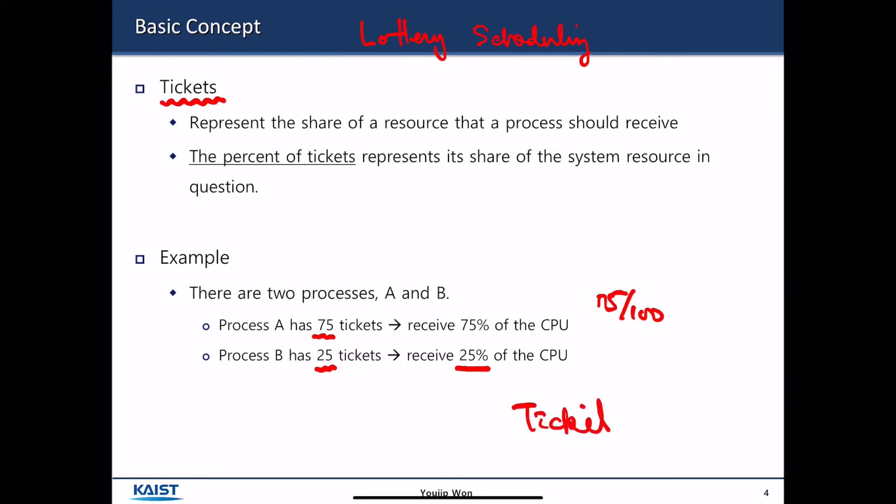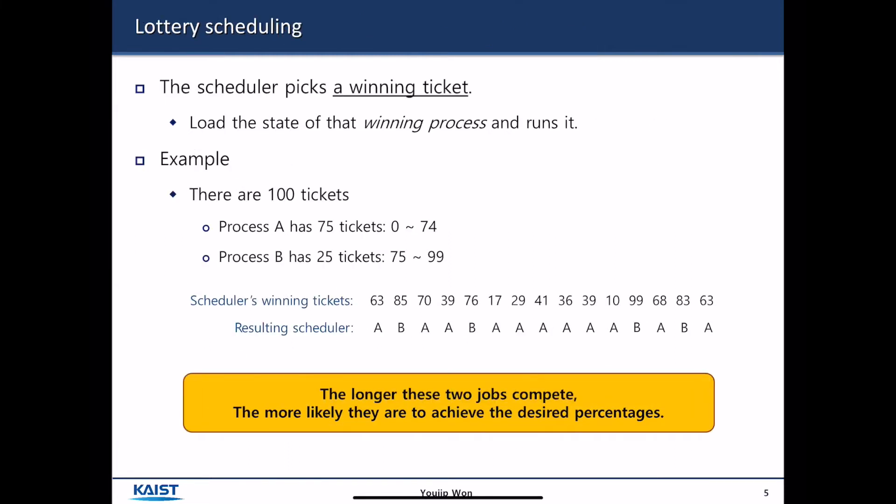Based upon Ticket, they define a scheduling strategy called Lottery-based Scheduling. A scheduler picks a winning ticket and loads the state with the winning process and runs it.